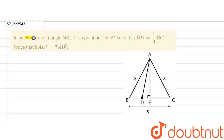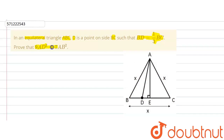The given question says that in an equilateral triangle ABC — an equilateral triangle is a triangle where all three sides are equal — D is a point on side BC such that BD is equal to one-third of BC. We are required to prove that 9 times AD square is equal to 7 times AB square, where AB is the side of the equilateral triangle.